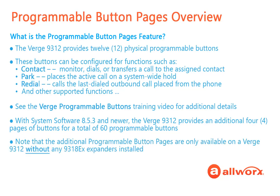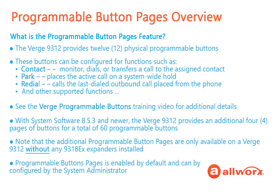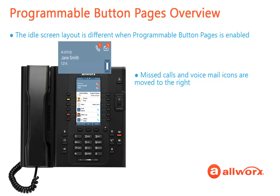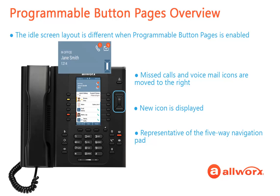Please note that the programmable button pages are only available on a Verge 9312 phone without any 9318 EX expanders installed. The programmable button pages feature is enabled by default and is configurable by the Allworks System Administrator. The layout of the idle screen will be slightly different when the Programmable Button Pages feature is enabled — the missed calls and voicemail icons are moved slightly to the right. A new icon, representative of the five-way navigation pad, is displayed when the feature is enabled.